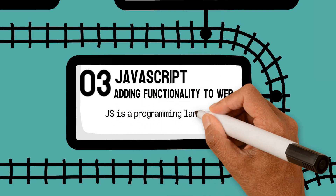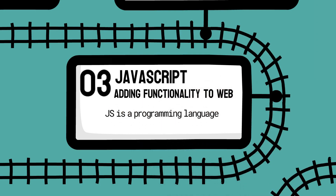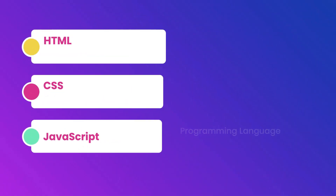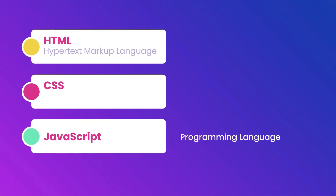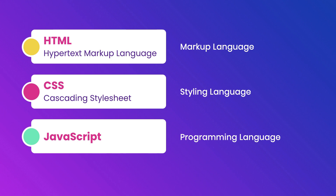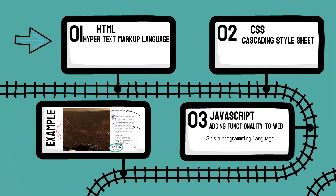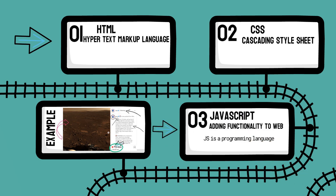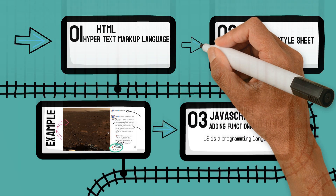JavaScript is a programming language, while HTML and CSS are not — meaning we cannot use them to tell computers what to do. We use them to define building blocks and style our webpages. Every webpage you've seen on the internet is built with these three languages, so the better you understand them and their features, the better you will be at front-end development.